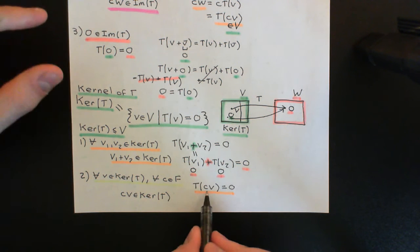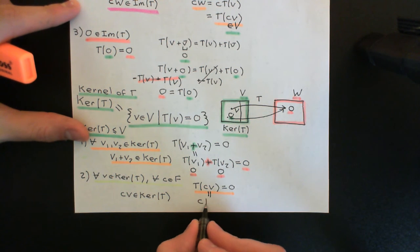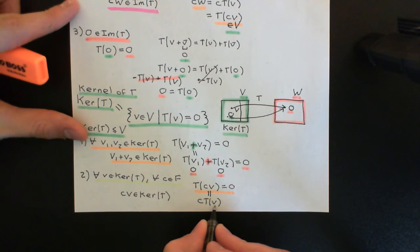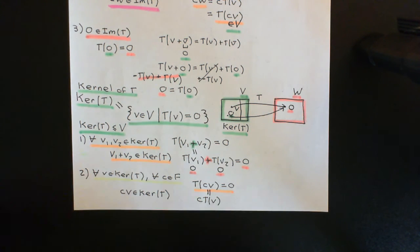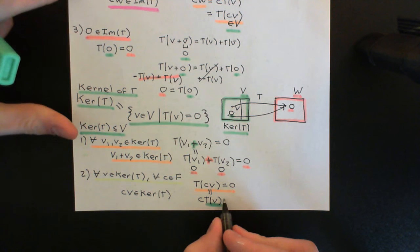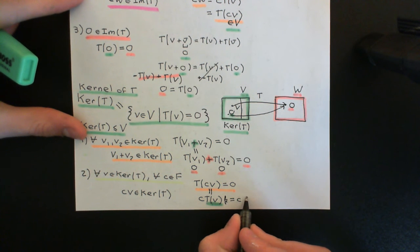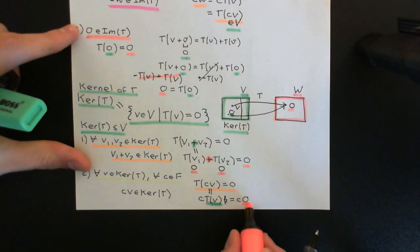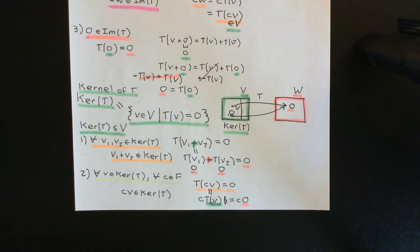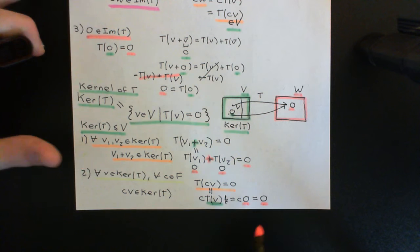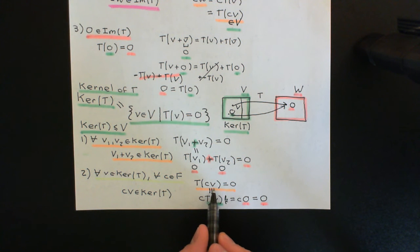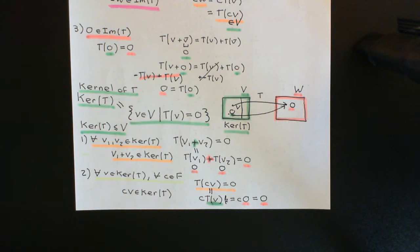To analyse what T of (c times v) equals, we use the second property of linear transformations: T of (c times v) equals c times T(v). But we know something about T(v) because v is an element of the kernel, so T(v) is just the zero vector in the codomain. So we have c times the zero vector, and we know that scalar multiplying the zero vector by any scalar always gives the zero vector back — that's one of the properties of vector spaces. Hence the kernel is closed under scalar multiplication.